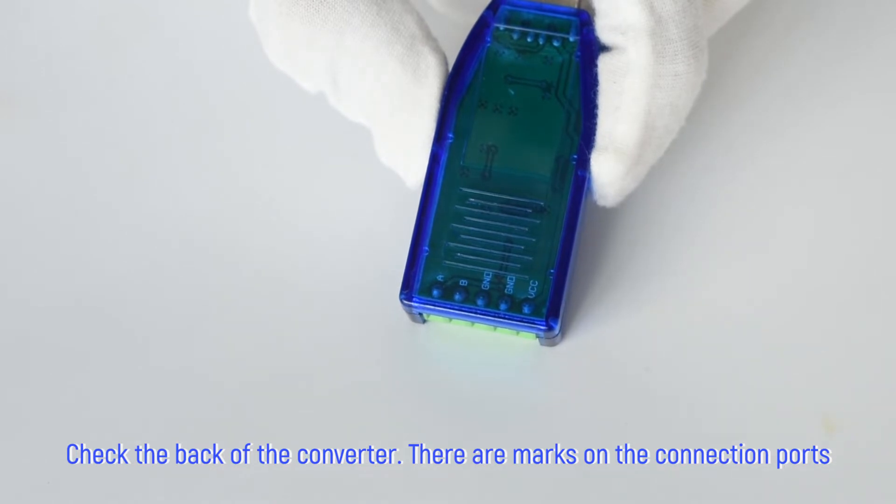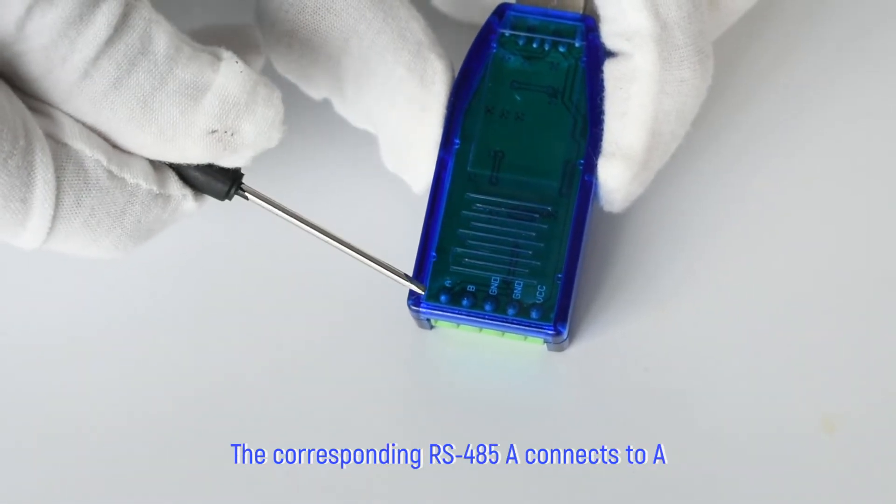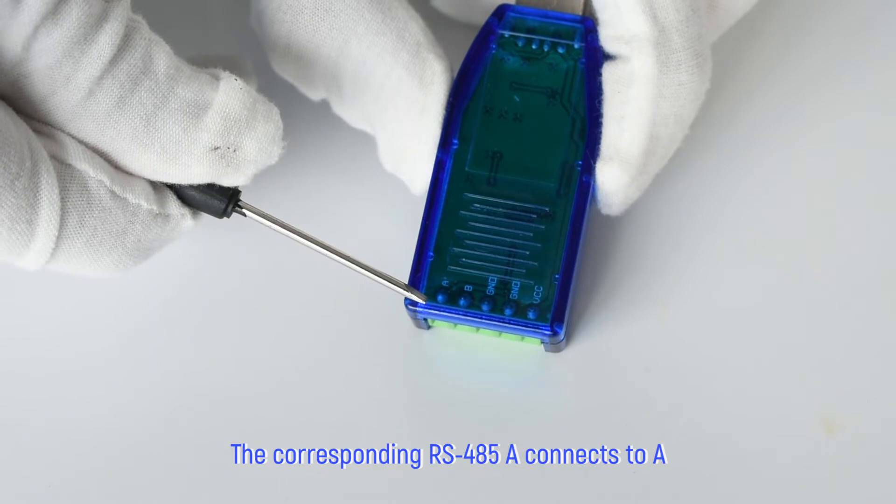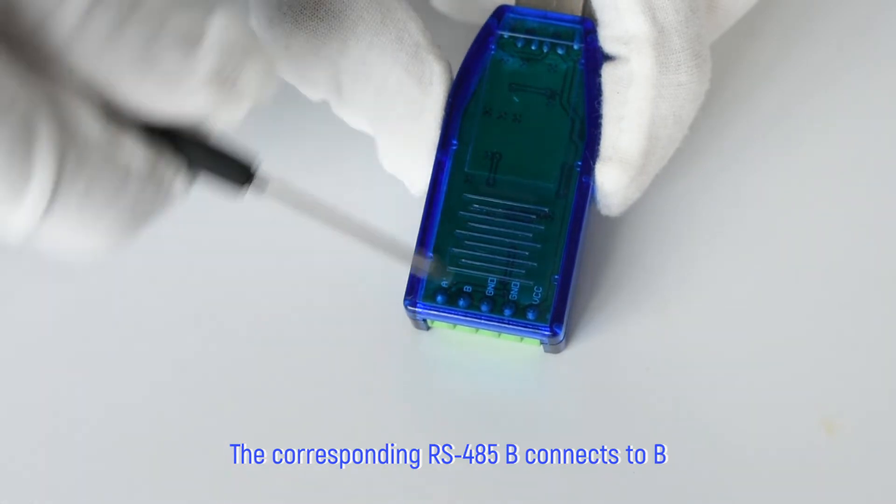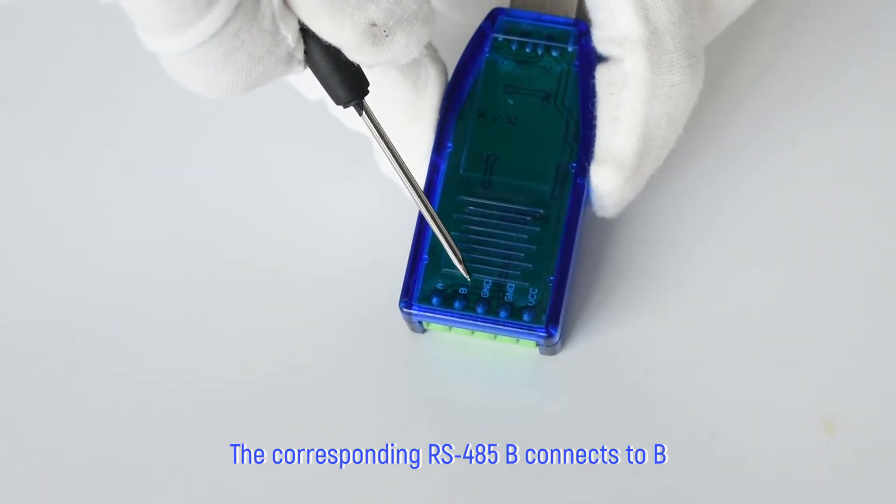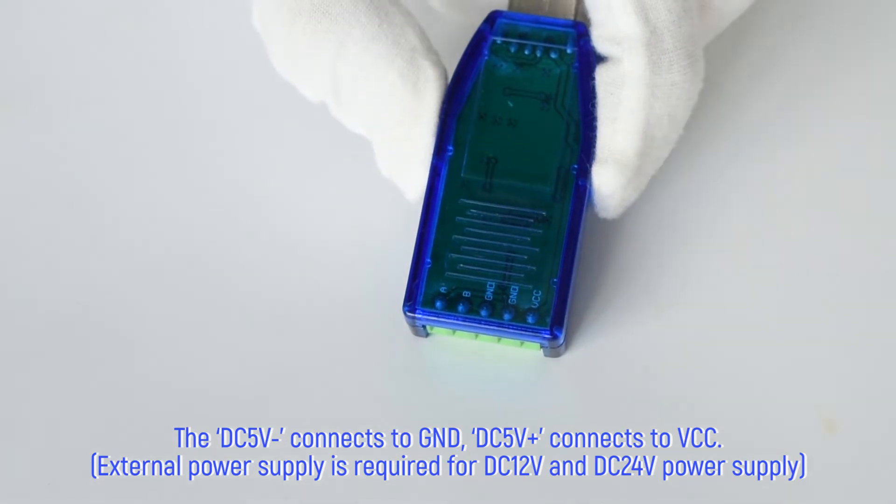Check the back of the converter. There are marks on the connection ports. The RS485A connects to A, RS485B connects to B. The DC5V minus connects to GND, DC5V plus connects to VCC.